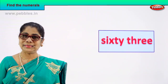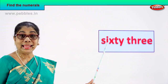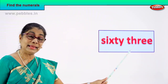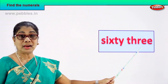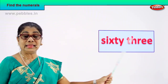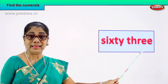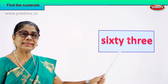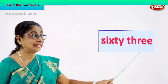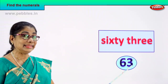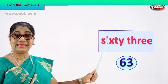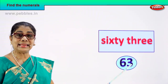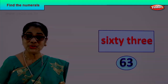Good. Look what you have here: S-I-X-T-Y, sixty, T-H-R-E-E, three — sixty-three. Sixty-three. How do you write the numeral? Six and three — sixty-three. Six and three — sixty-three. The numeral for sixty-three: how do you write it? Six and three — sixty-three. Good.